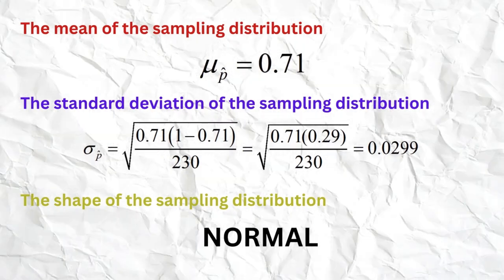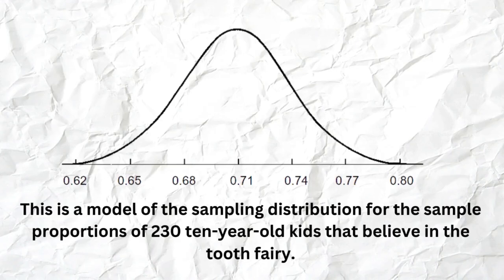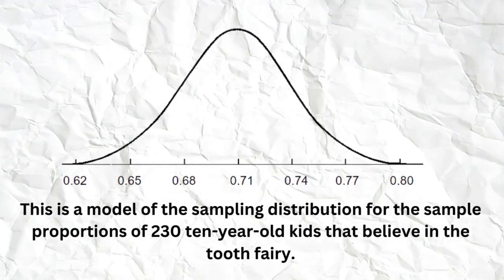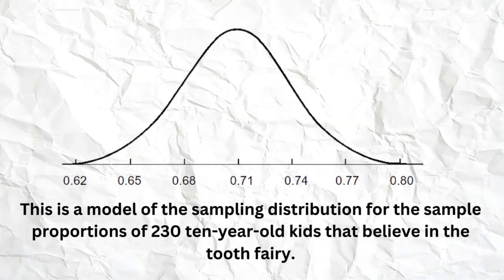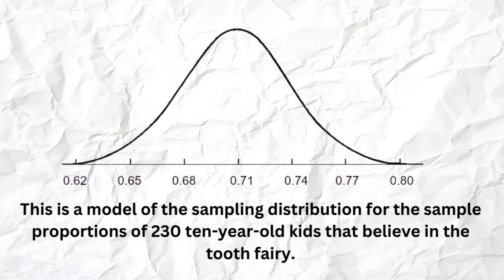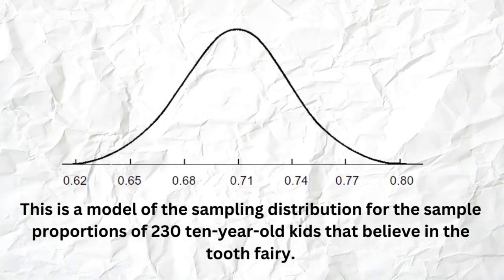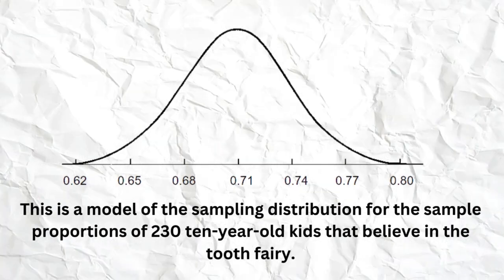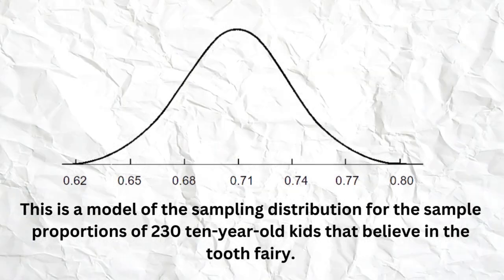Lastly, the shape will be normal as long as our sample is big enough. We check: 230 × 0.71 and 230 × 0.29 — both well above 10 — so the sampling distribution will be normal. Here is a picture of that sampling distribution. Right in the center is the mean of 0.71; going up one, two, three standard deviations gives us 74%, 77%, and 80%; going down gives us 68%, 65%, and 62%. And of course the shape is normal.